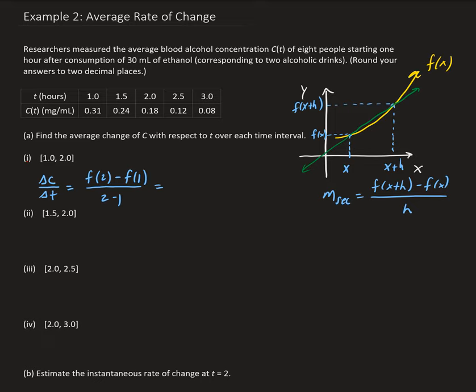The y values are going to come from the table. For the value of 2 hours, we have 0.18, and for 1 hour we have 0.31. So we get 0.18 minus 0.31, divided by 1, which gives us negative 0.13.